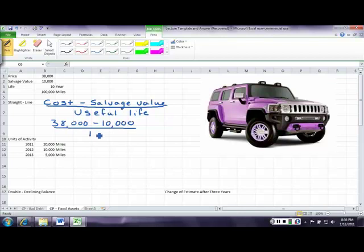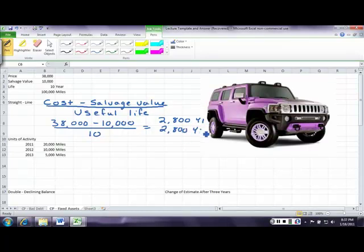We divide that by our useful life of 10, and we're going to recognize $2,800 depreciation in year 1, $2,800 in year 2, and $2,800 in year 3. That's why we call it straight line.